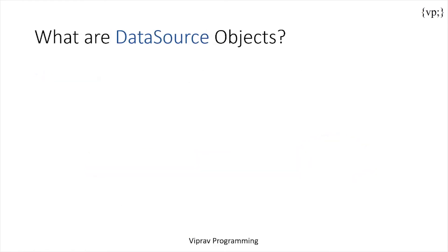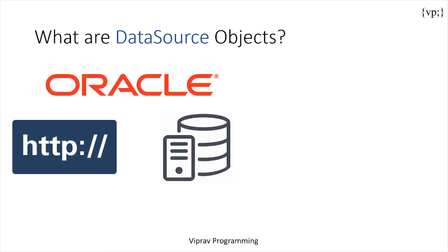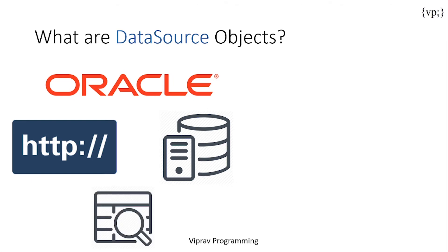Now let's take a look at data source objects. Data source objects are a set of properties that identify and describe a real world data source they represent. These properties include the name of the database, data server, and network protocol used to communicate with the server. To store, organize, and retrieve data, most applications use a relational database, which is just a database that is sorted using tables.